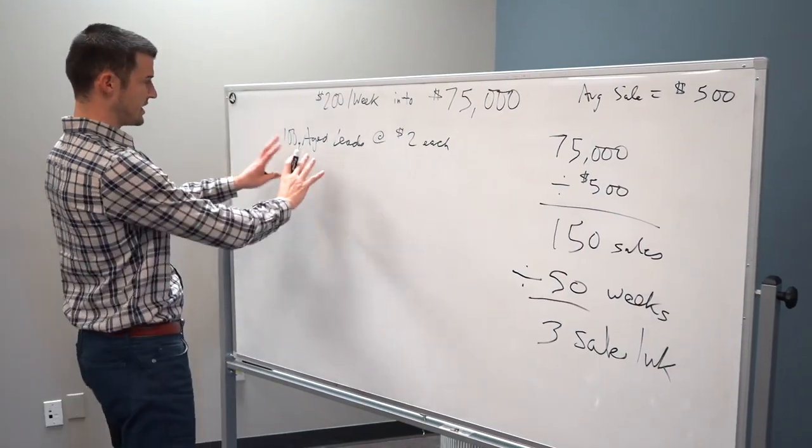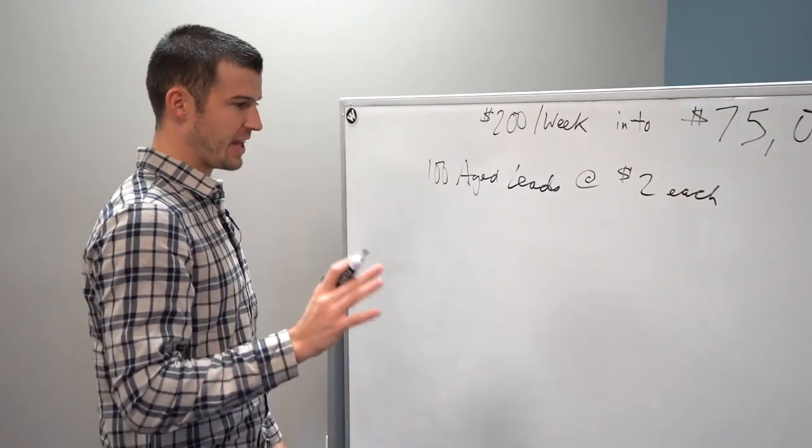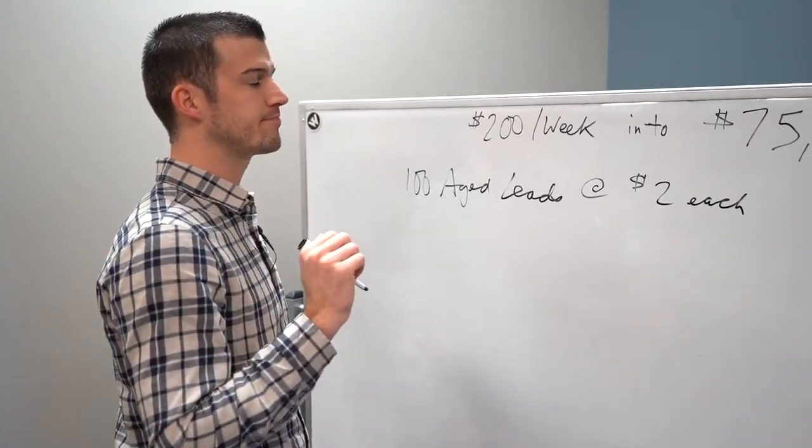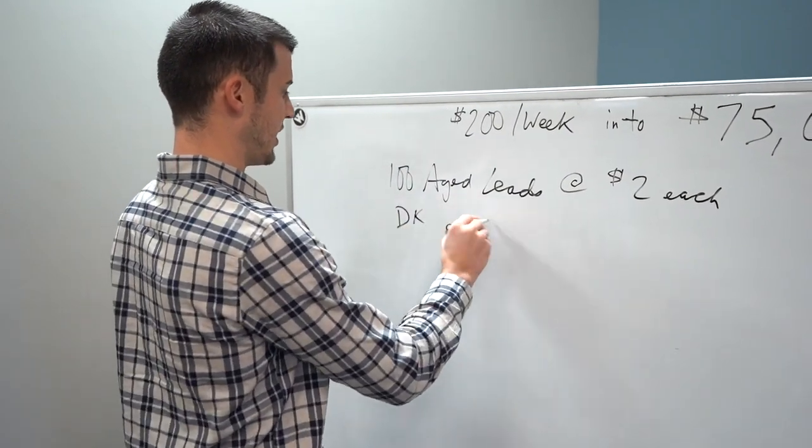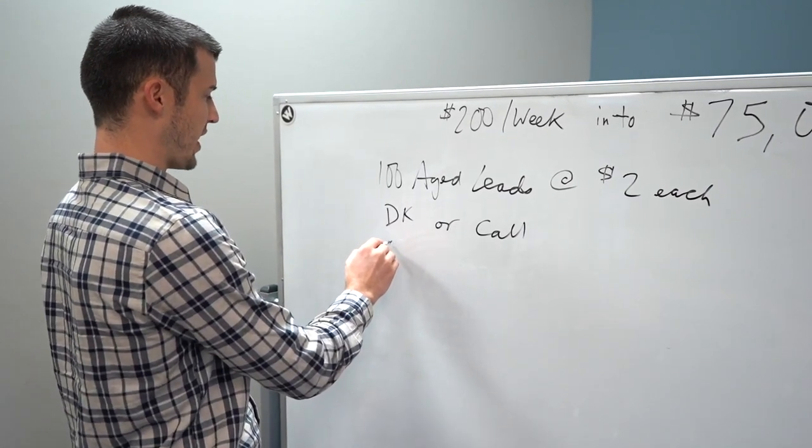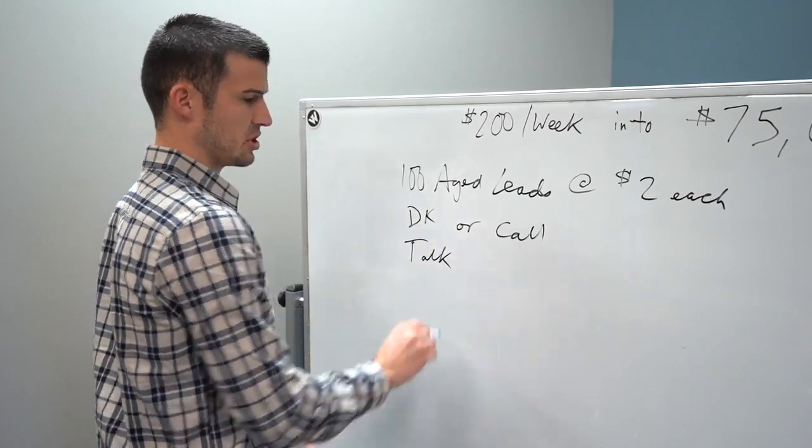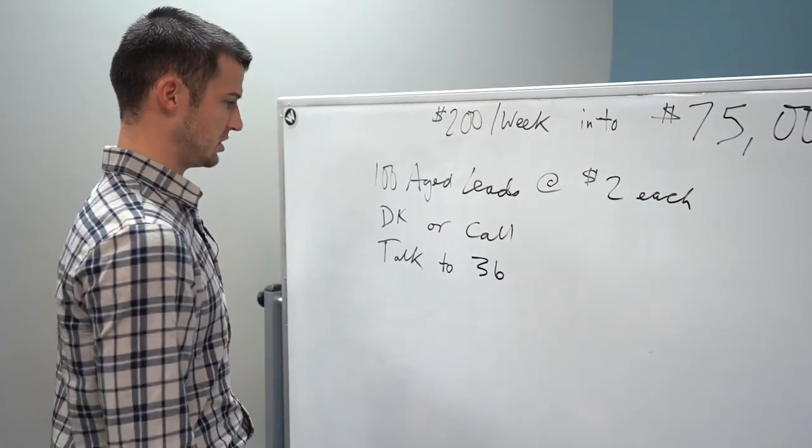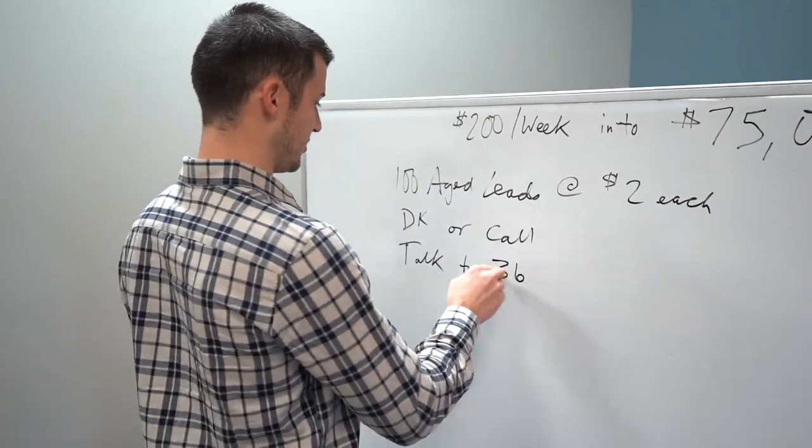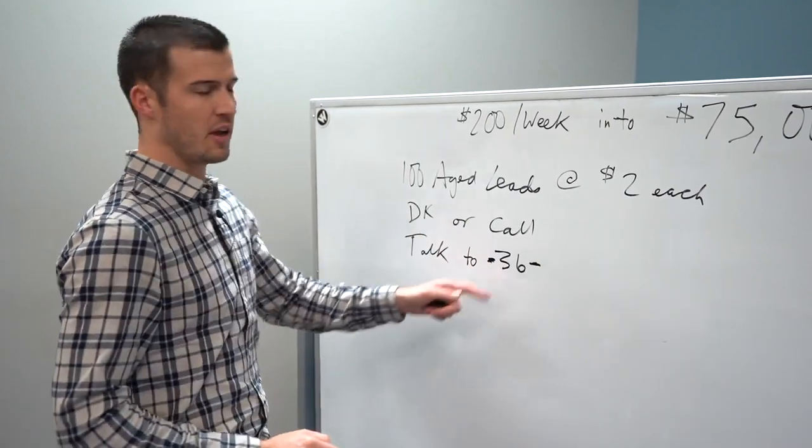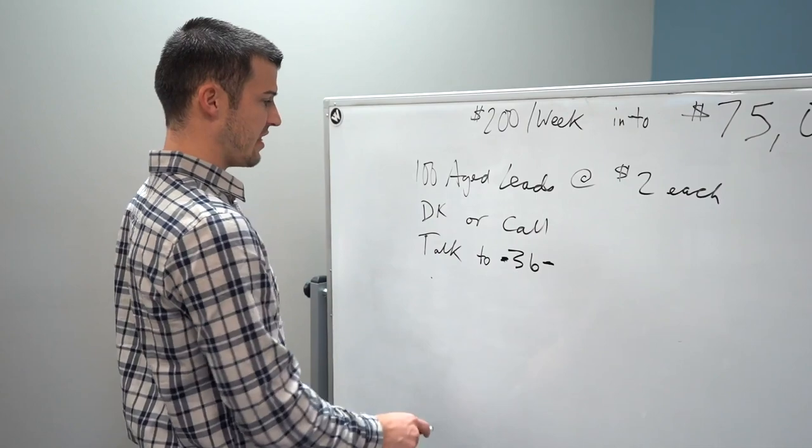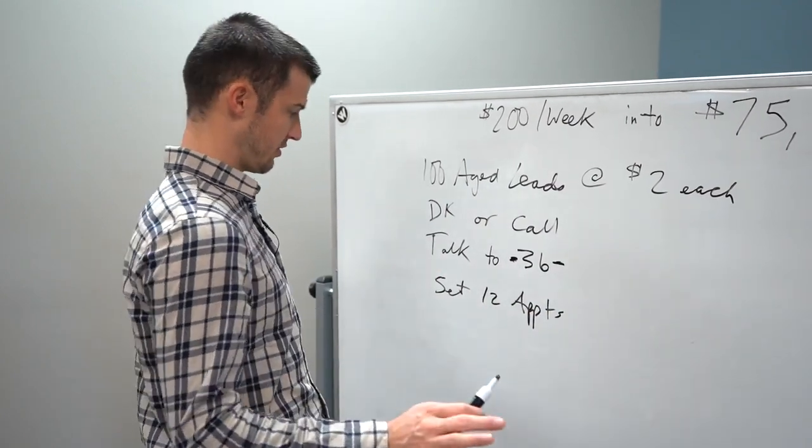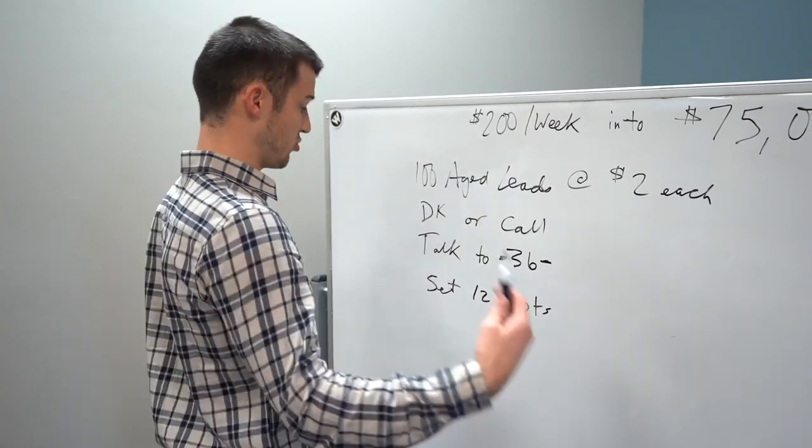Three sales a week. So if you think about that, so now let's go back to 100 aged leads. Let's just say that you either door knock or call, I don't care if you door knock or call, that's up to you. And let's just say that you actually talk to, let's just say about 36 people. You can figure out your own numbers because if you make a few calls to them, you're probably talking to about 36 people. Let's just say that out of those you set 12 appointments.